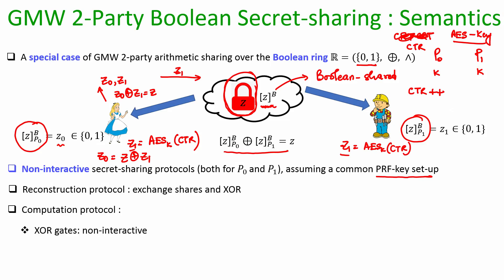How are computations performed in the Boolean GMW world? XOR gates, since they are linear gates, can be evaluated non-interactively: if Z and W are both Boolean secret shared as per GMW's Boolean representation, to get the secret sharing of Z XOR W, both parties simply locally XOR their respective shares of Z and W.